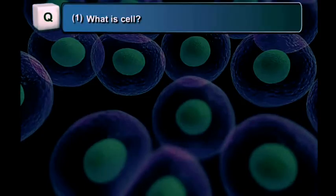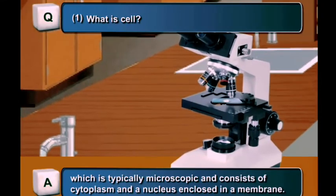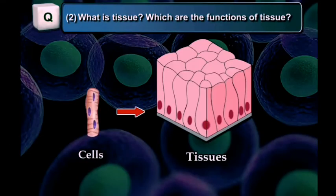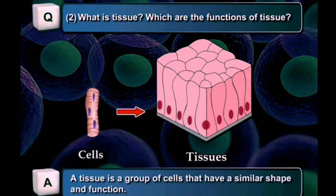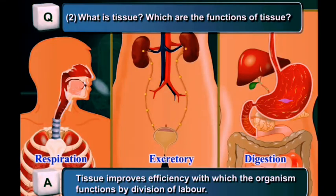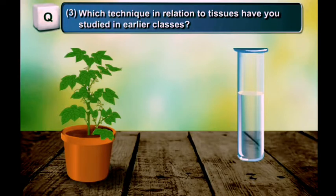Before starting, let us recall: what is a cell? A cell is the smallest structural and functional unit of an organism, which is typically microscopic and consists of cytoplasm and nucleus enclosed in a membrane. What is tissue? A tissue is a group of cells that have similar shape and function. Tissue improves efficiency by division of labor, with different tissues performing different specialized functions.